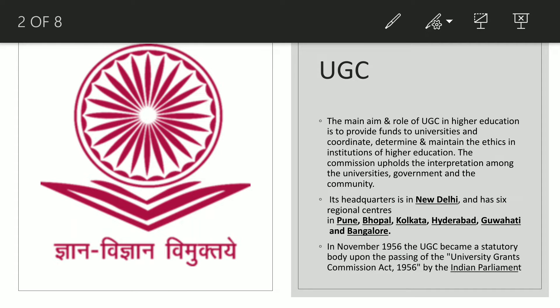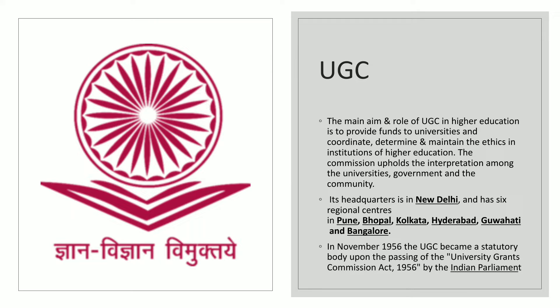UGC came into existence in 1953, but it became a statutory body through an act in 1956, passed by the Indian Parliament. Its main motto is 'Gyan, Vigyan, Vimukti' — knowledge, science, and liberation. This should be clear to you.